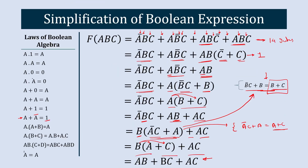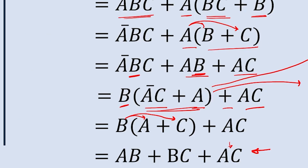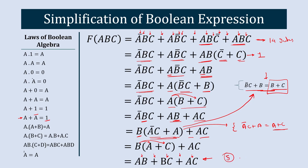Now let's see how many gates we require to implement this equation: AND gate, OR gate, AND gate, OR gate, AND gate, AND gate — 1, 2, 3, 4, 5. So we require only 5 gates to represent this equation. Previously it was 14 gates, and now we have shortened it to 5 gates, which is almost 33% of the original equation. Indirectly, we can say that a 66% reduction in power consumption has been achieved.